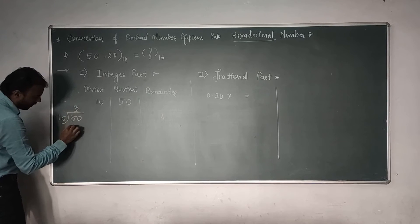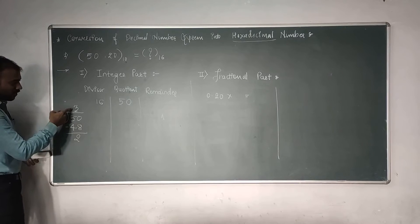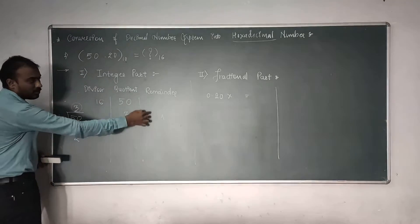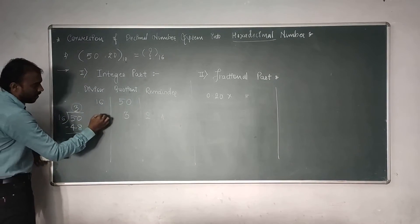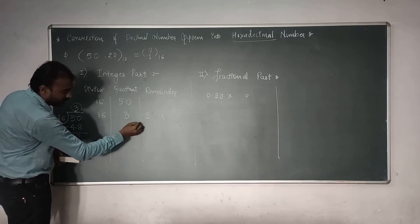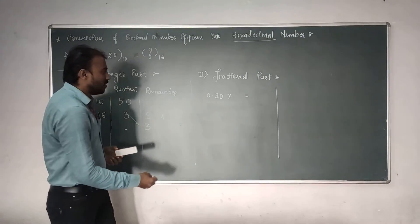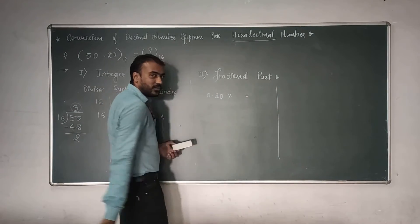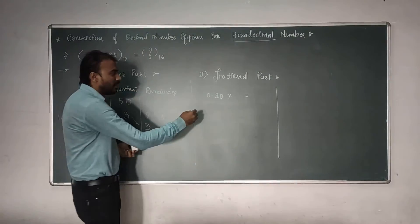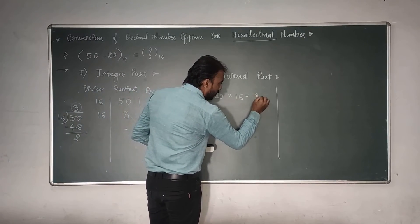Dividing 50 by 16: 16 times 3 is 48, remainder is 2. So the quotient is 3 and remainder is 2. Again divide the new quotient 3 by 16 — but 3 cannot be divided by 16, so it is the final remainder. For the fractional part, multiply 0.20 by 16, the base value of hexadecimal.